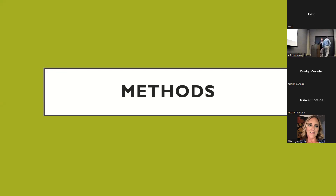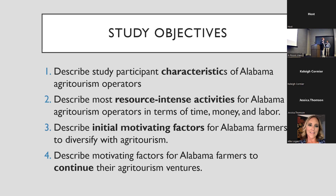From the extension side, we wanted to know more about agritourism operators in Alabama — their characteristics. Were they U-pick operations? Were they entertainment-based with hayrides and Halloween themes? When you talk to the Alabama Department of Agriculture and Industries, they have farm data, but they can't share specific data if only three operators are in a county — they have to be protective of that data.